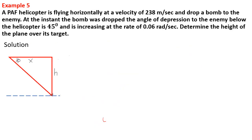A helicopter is flying horizontally at a velocity of 238 meters per second. At the instant the bomb was dropped, the angle of depression to the enemy below the helicopter is 45 degrees and increasing at the rate of 0.06 radians per second. Determine the height of the plane over its target. So dx over dt equals minus 238, as it is approaching.